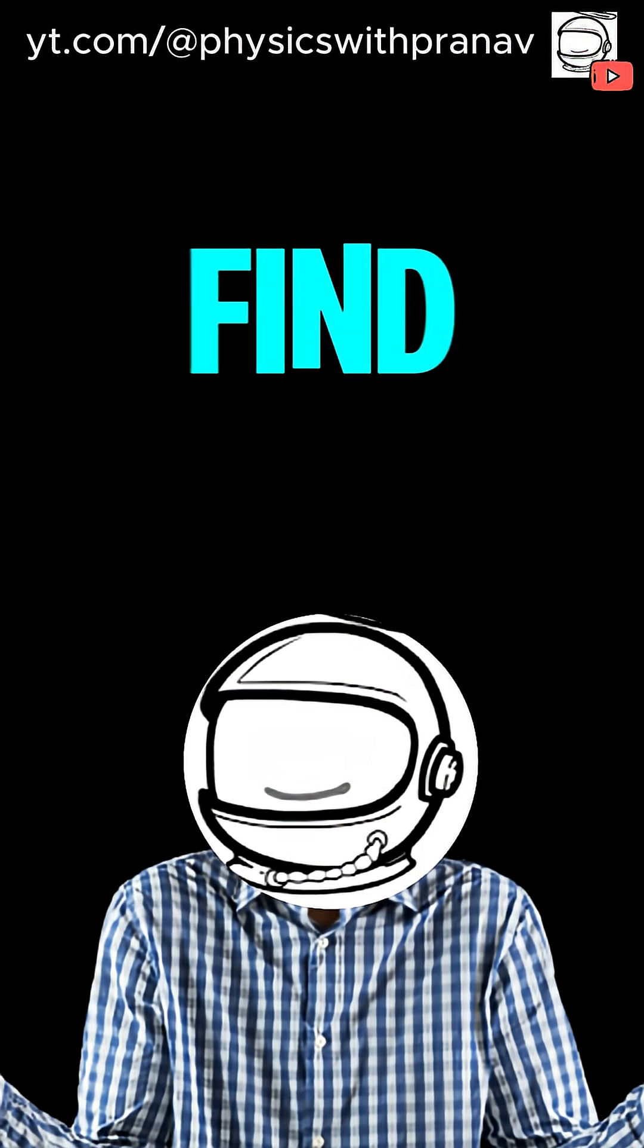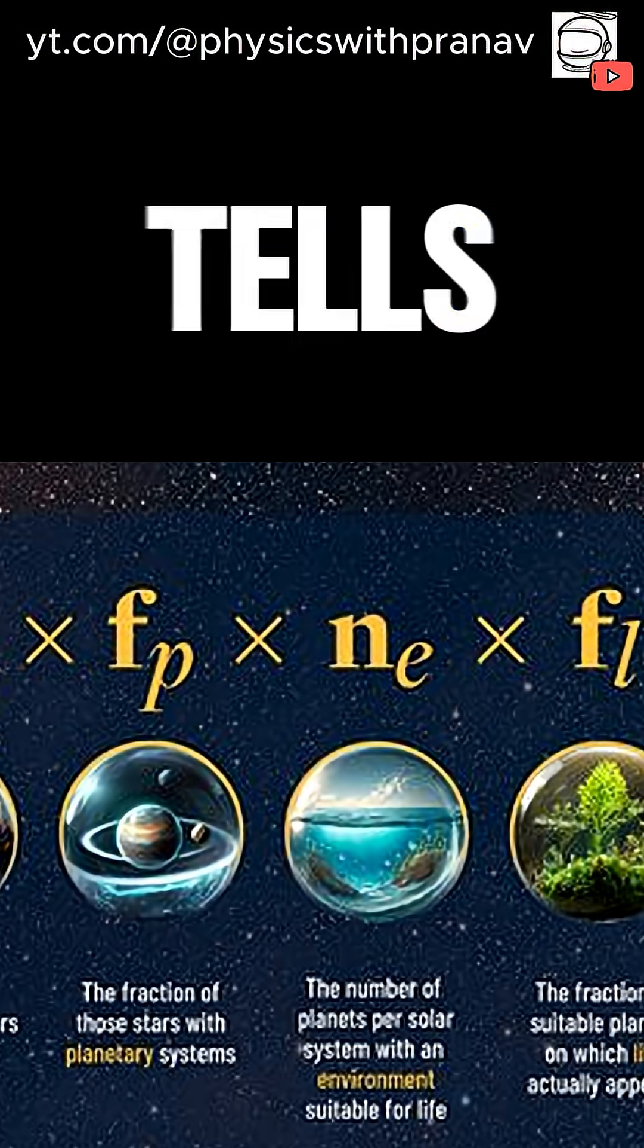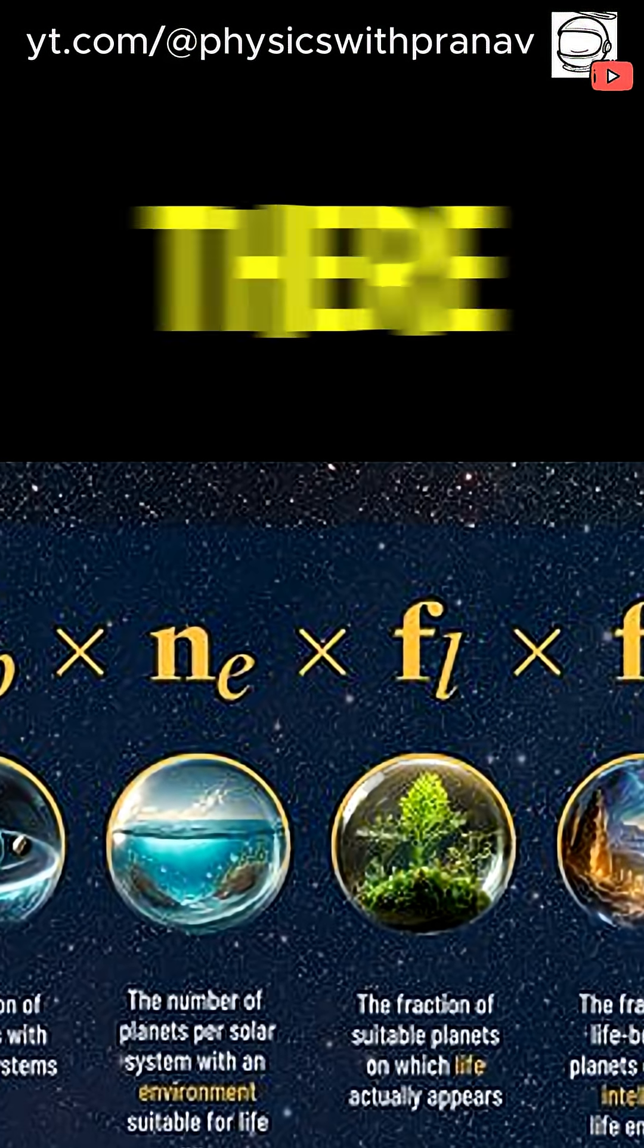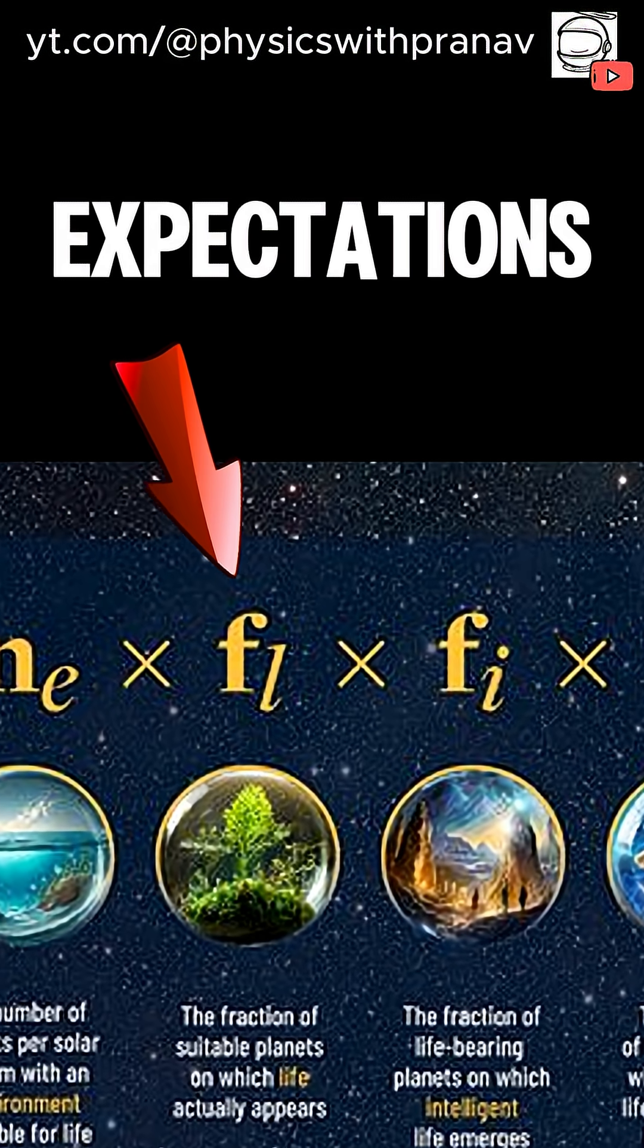So why can't we find aliens? If the Drake equation tells us that there should be so many aliens out there, even with low expectations of all of these constants,